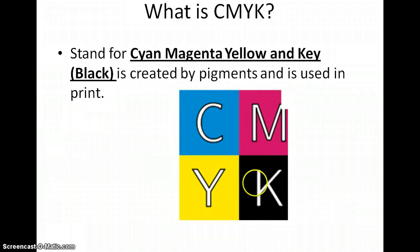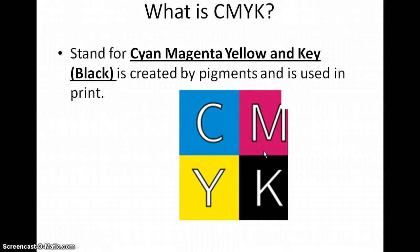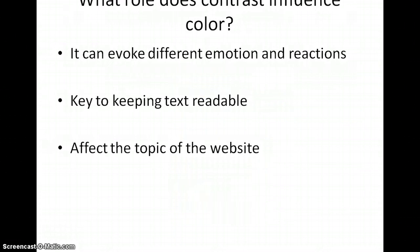What is CMYK? It stands for Cyan, Magenta, Yellow, and Key — which is black. You have an example at the bottom showing the different colors from CMYK. As it says here, it is created by pigments and is used in print.